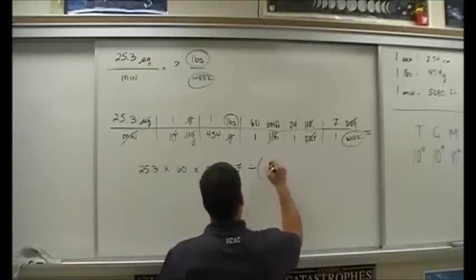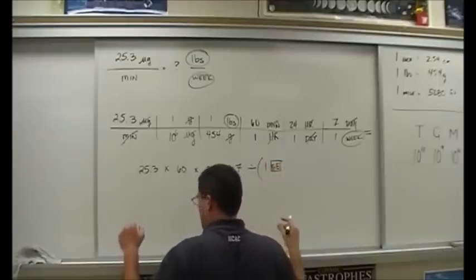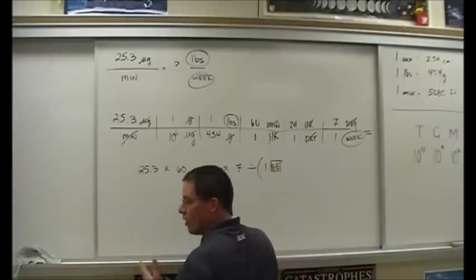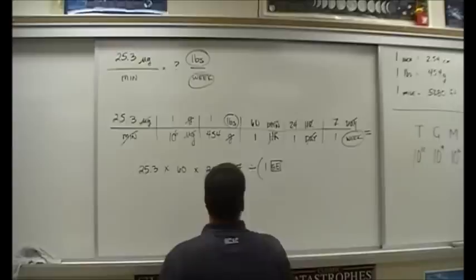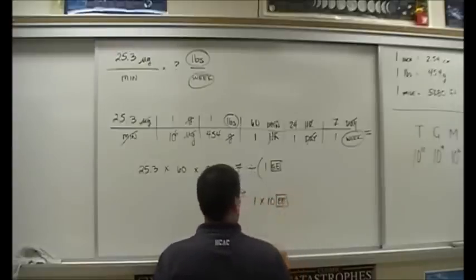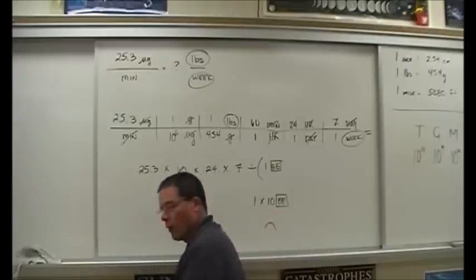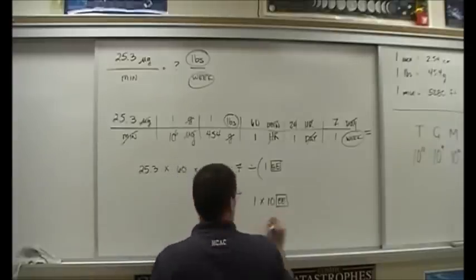When entering 10 to the 6 in the calculator, use 1 EE 6, or the EXP button, or 1 times 10 caret 6. Whatever you do, don't type 1 times 10, then EE — that's bad, that makes Mr. Craig sad. So 1 EE 6 — what did we say? — times 454, then close parentheses.